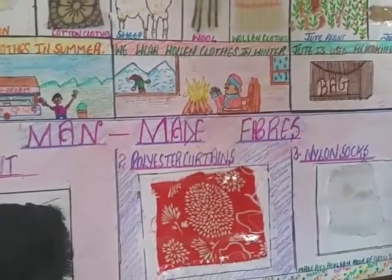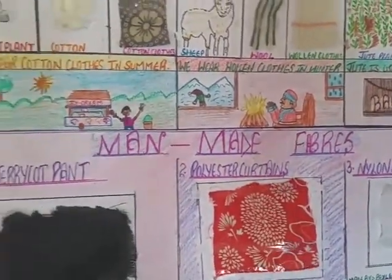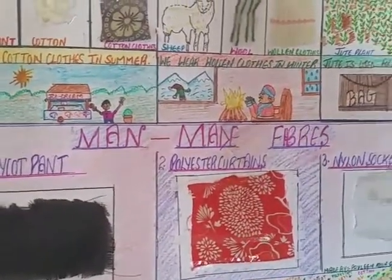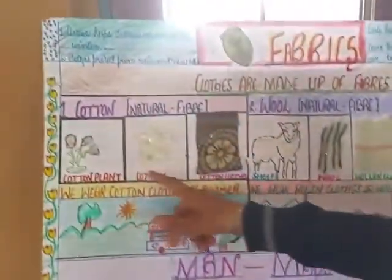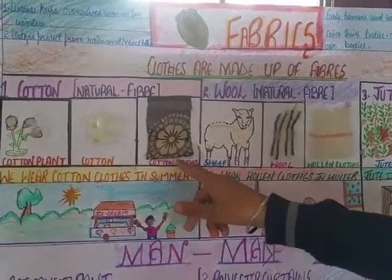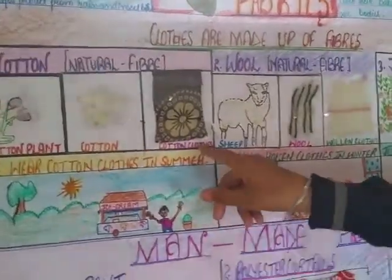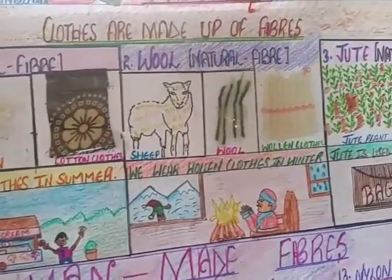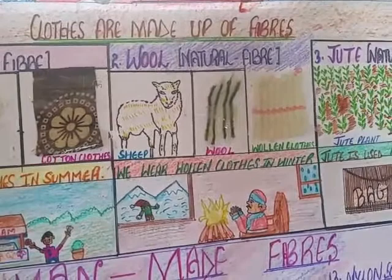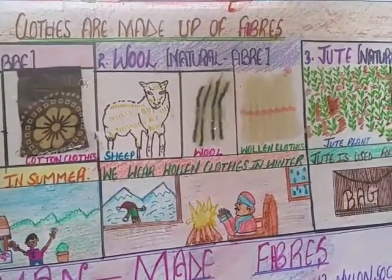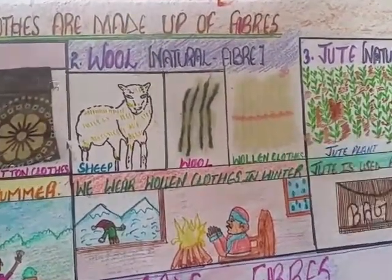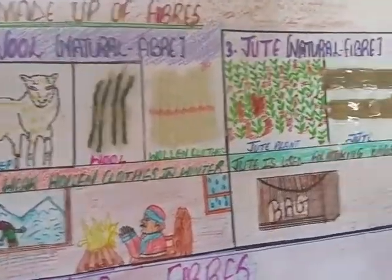Natural fabrics and manmade fabrics. Natural fabrics include cotton, which is used to make clothes. Second is sheep, from which we get wool, used for clothes. Another natural fabric is jute.